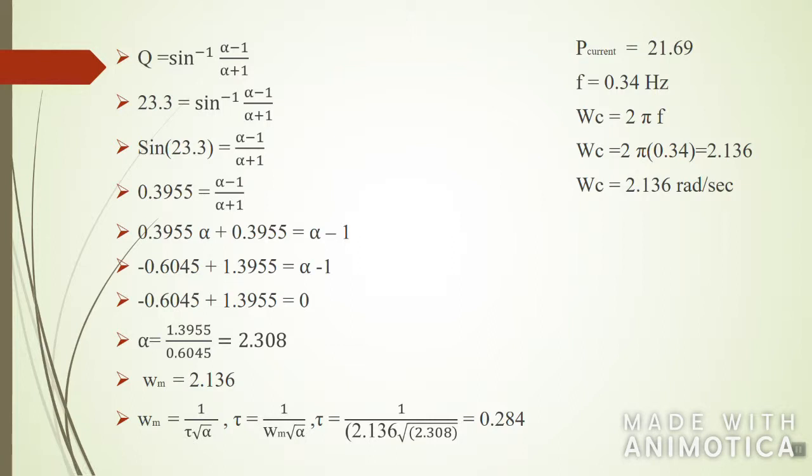By multiplying with 2π f, so ωc is equal to 2π f, we obtain that ωc is equal to 2.136 radians per second. In order for us to design a compensator for this system, we require two things: the value of alpha and the value of tau. All the following calculations is to obtain the value of alpha and the value of tau. We know φ maximum is equal to sin⁻¹((α-1)/(α+1)). We already obtained φ max before, so we know it's 23.3.